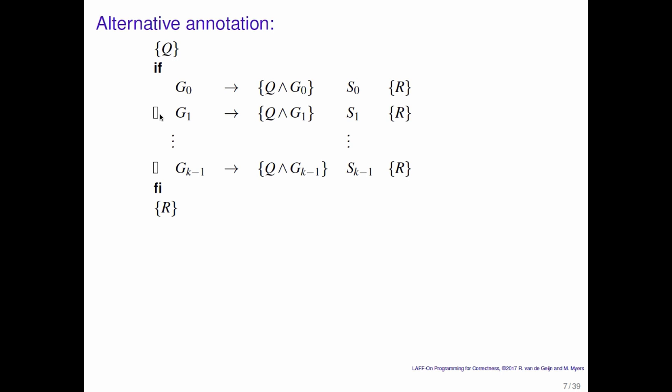And what does that mean? Well, we can go down the checklist instead. It has to be the case that Q implies that one of the guards is true. But then each of these Hoare triples must be true.